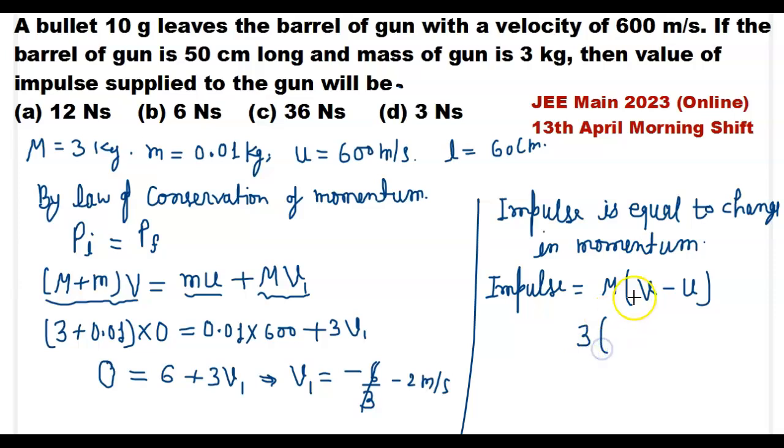Mass of gun is 3 kg, final velocity of gun when it stops is 0, and initial velocity of gun is minus 2 meter per second, so minus minus becomes plus.